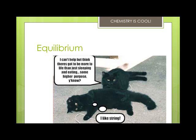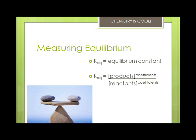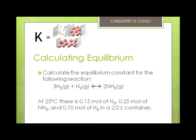Catalysts will speed up both the forward and reverse reactions so they don't affect the equilibrium position; they just get you there faster. At equilibrium, the concentration of products and reactants is constant. We can write a constant that will tell us where the equilibrium position is. Square brackets in this equation means we're talking about the concentration or molarity of each component. Remember, molarity is moles per liter. KEQ is the equilibrium constant, and it is only affected by temperature.